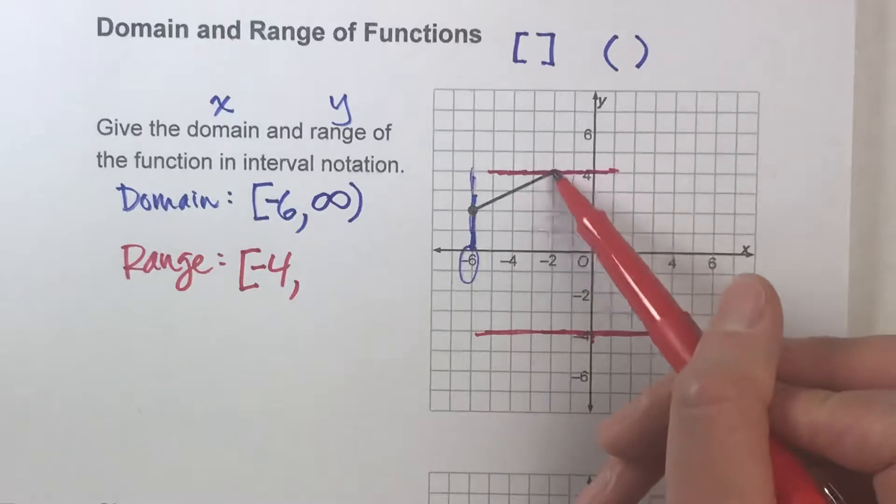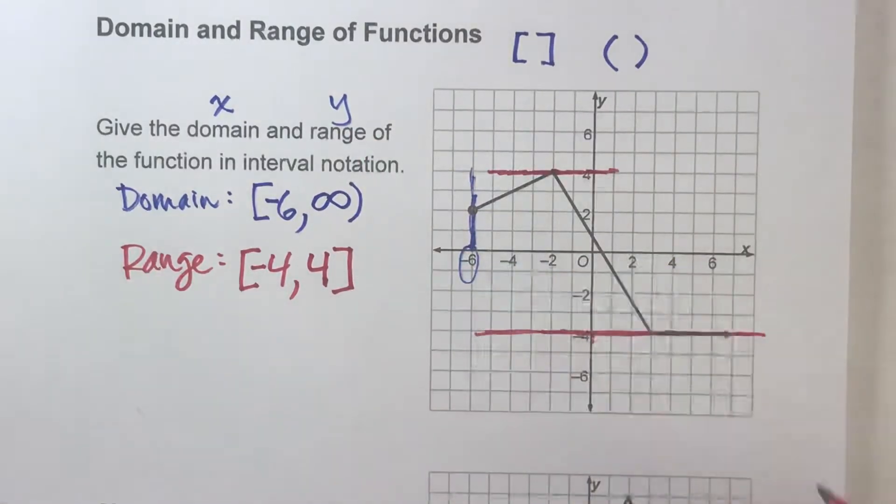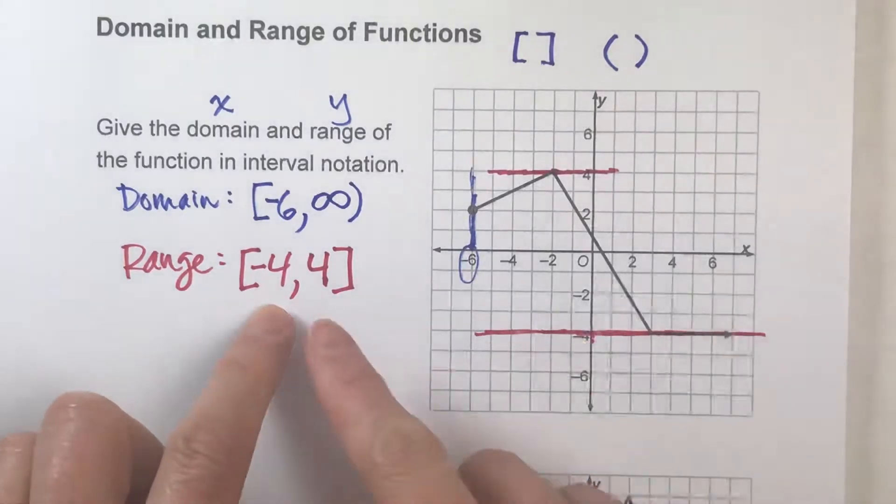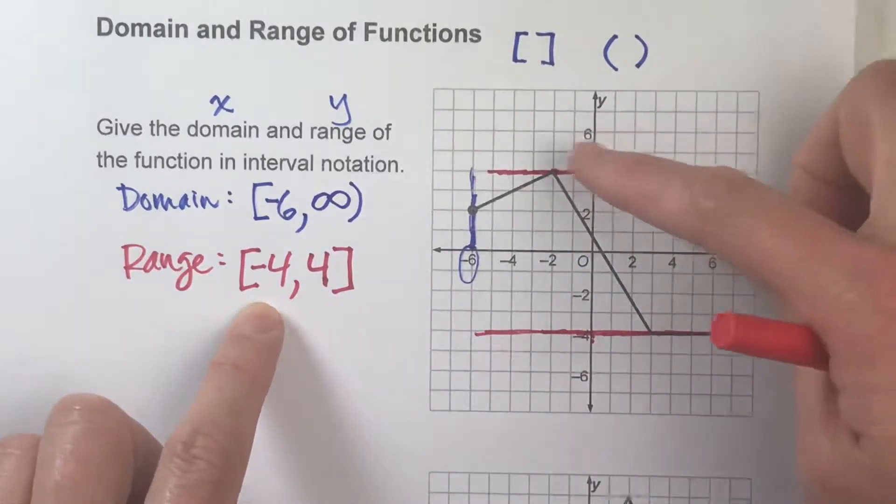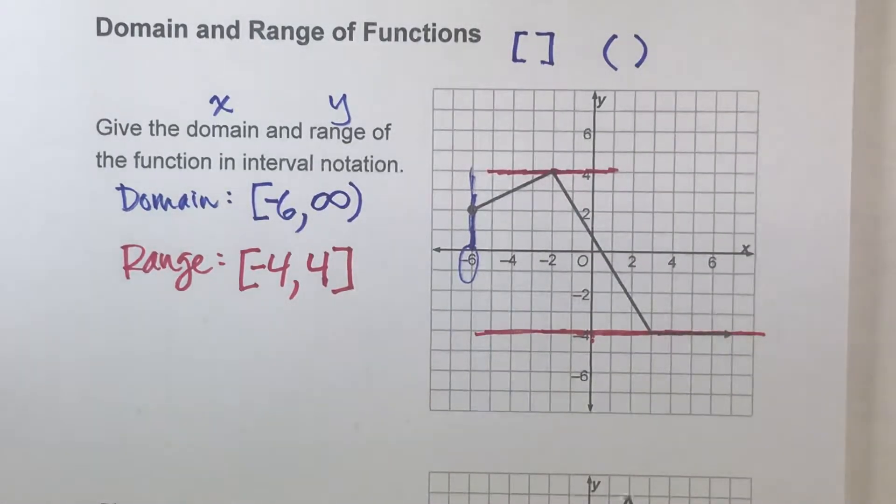Well, yeah, there's a point right there. It just touches it for an instant, but yeah, it can be 4. So I'll put 4 there, and then again, it's a bracket, because it could be 4. So that's how we would say that the range is, or the possible y values of this function are, from negative 4 up to and including positive 4.